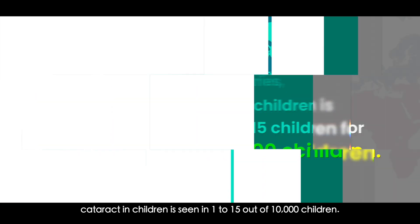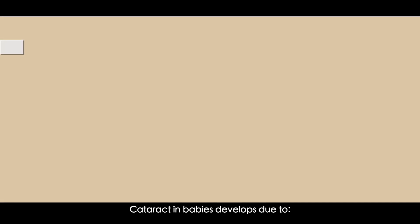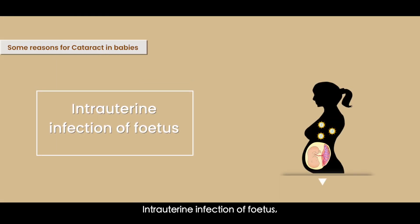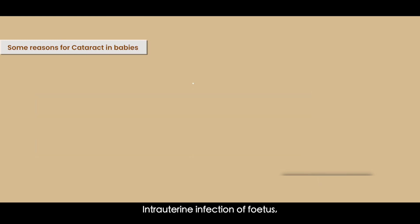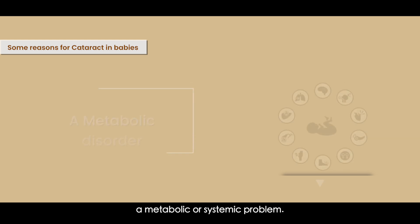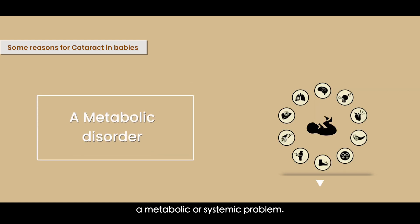Some reasons for cataract in babies are intrauterine infection of the fetus, inherited disorders, or a metabolic disorder — that is, a systemic problem in the newborn baby.